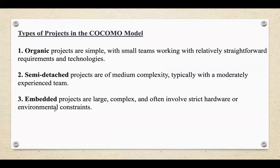Types of projects in the COCOMO model: software projects are classified into three main types based on their complexity, development environment, and constraints involved. These types help in determining the constants and effort multipliers used in the model's calculations. The first type is organic projects — small to medium-sized software projects that are relatively simple in terms of complexity and development constraints. The project is typically developed by a small team, requirements are well understood and stable, and the team is familiar with the problem domain. Examples include simple business applications, small desktop applications, or prototype systems.